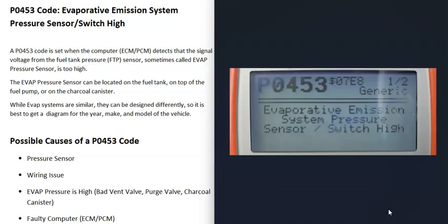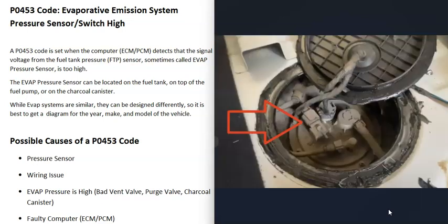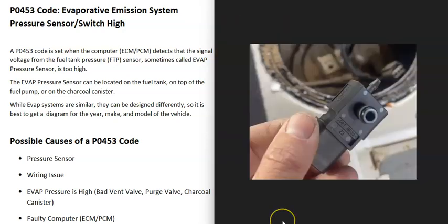The first possible cause is that the pressure sensor has gone bad and just needs to be replaced. These sensors can be located differently — sometimes on the fuel pump, sometimes on top of the gas tank, and sometimes inside the charcoal canister. You'll need a diagram for your particular vehicle. You can test the sensor; there are good YouTube videos on that, but a bad EVAP pressure sensor is the first thing to check.